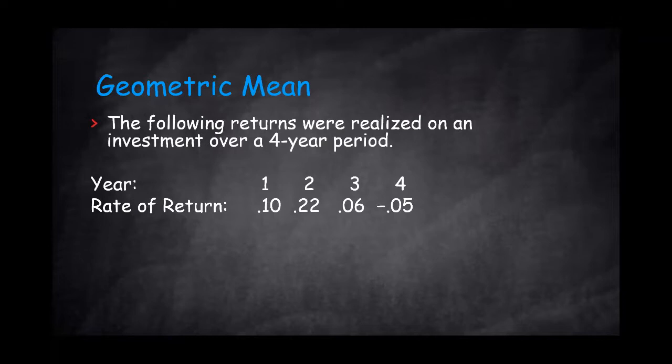Let's see an example. The following returns were realized on an investment over a four-year period. And you can see the year and you can see the rate of return. How do we calculate the geometric mean?